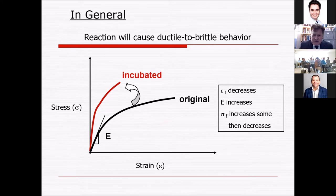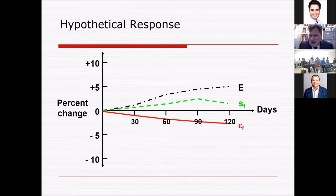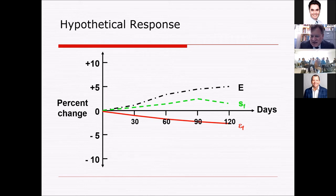What's going on is a decrease in strain, an increase in modulus, and an increase to some degree in strength. This is a cautionary tale: if people are bragging that their material is getting stronger as it ages, this is not a good thing. The hypothetical responses show an incubated value at time zero, typically testing at 30, 60, 90, and 120 days of exposure. You'll see the modulus increase, the strength increase, and the strain decrease. The best indicator is probably the strain decreasing with respect to time.